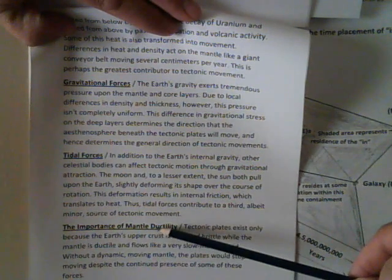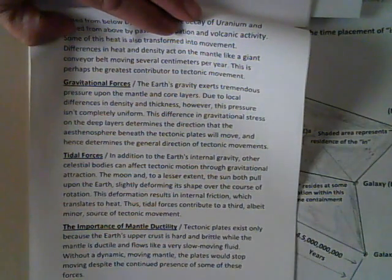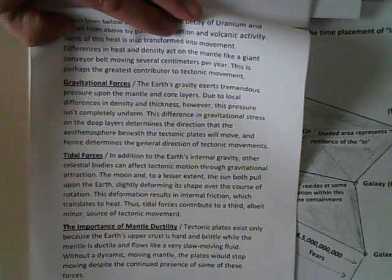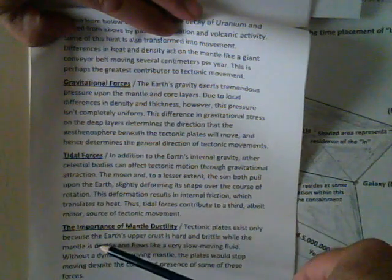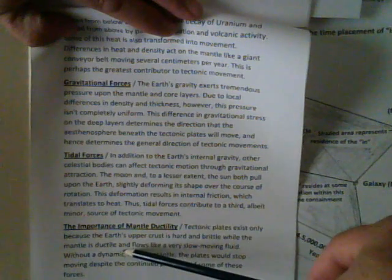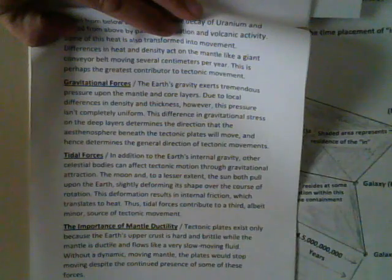The importance of ductility — ductility being the amount that a solid or molten surface is able to be moved without fracture. Tectonic plates exist only because the Earth's upper crust is hard and brittle, while the mantle is ductile — in other words, it can be moved without being fractured, and flows like a very slow-moving fluid. Without a dynamic moving mantle, the plates would stop moving, despite the continued presence of some of the other forces.